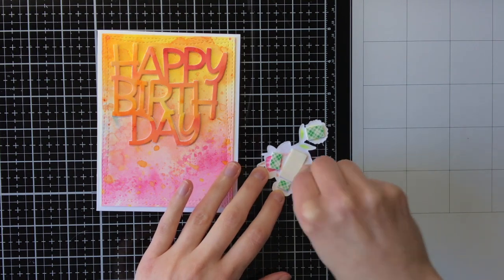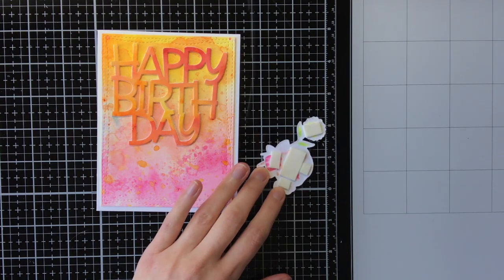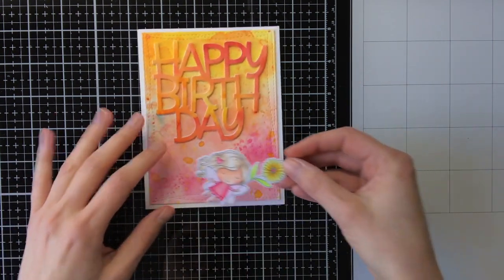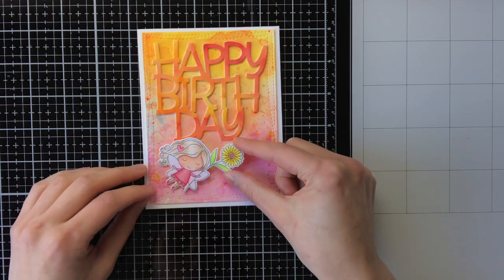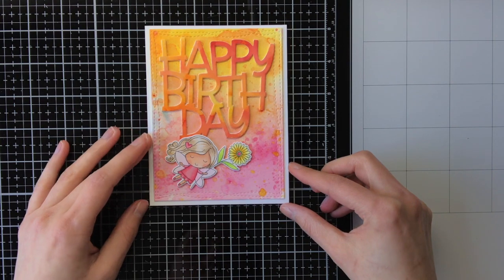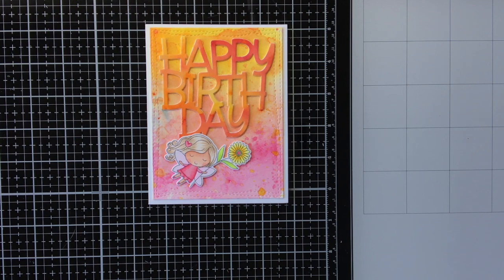To dress up the card a bit more I'm also going to add one of the flower fairies to it. I'm going to adhere her with scotch foam tape at the back to give her some dimension. When coloring her I decided to go with some of the same colors you see in the background to give it one coherent look.